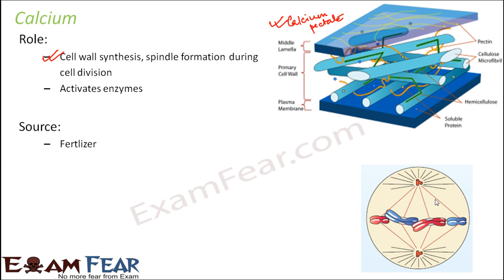Sources of calcium include fertilizers, dolomitic lime, and gypsum. Dolomitic lime is an anhydrous carbonate mineral that contains both calcium and magnesium. Gypsum is a soft mineral containing calcium and sulphate that can be used as a fertilizer; it is also a main constituent in many forms of plaster used for walls. So both dolomitic lime and gypsum are sources of calcium.